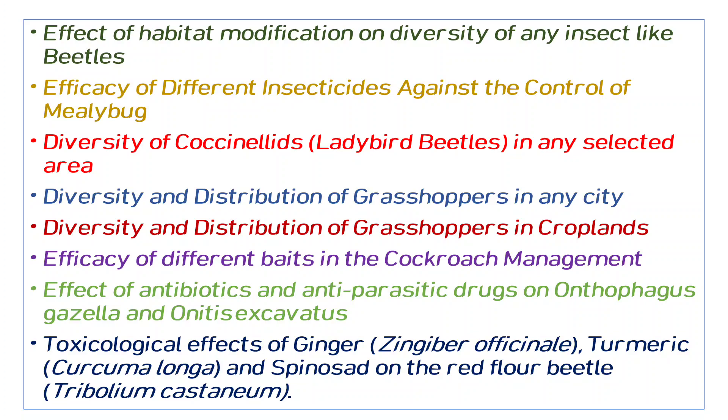This is habitat modification — when we change agricultural land into an industrial area. You can study what effect this has on insects and insecticides.